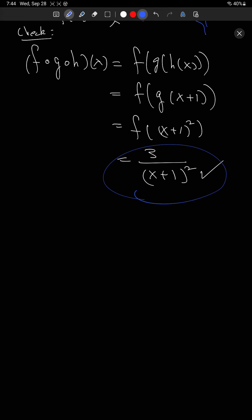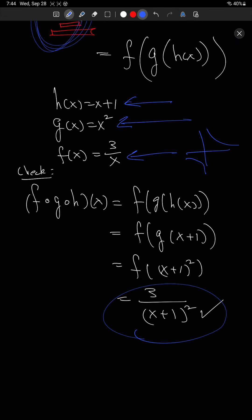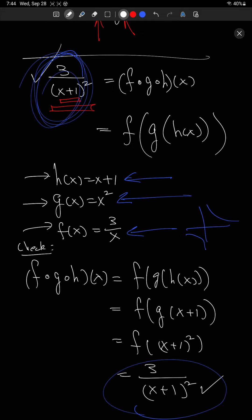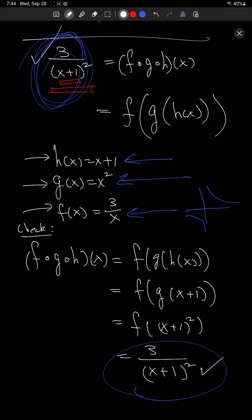I decided to break it down into three, but you could break it down into two, or even more. If I changed f of x to just 1 over x, here's a nice exercise: what additional function would you need to add as one more composition in order to recreate the original function — the 3 over something version?